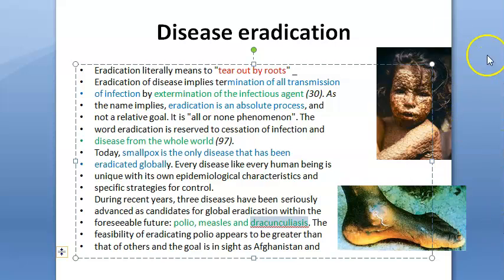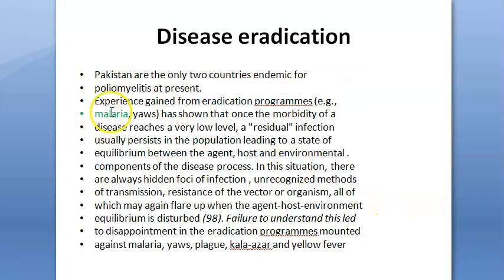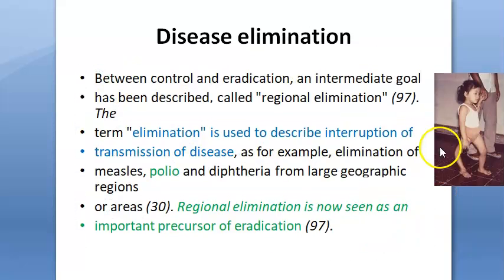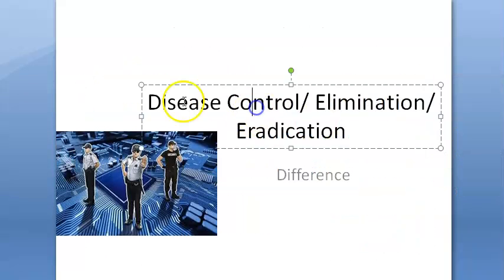Polio could join the eradicated list of diseases if it is removed from three countries: Afghanistan, Pakistan, and Nigeria. They are also trying to eradicate measles and malaria. So in this video you have understood the difference between control, elimination, and eradication.